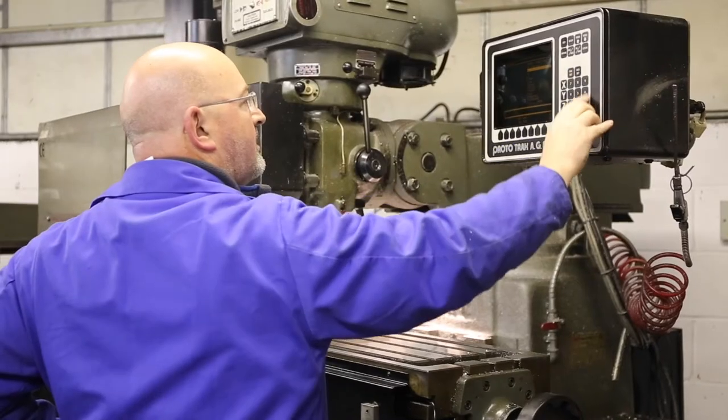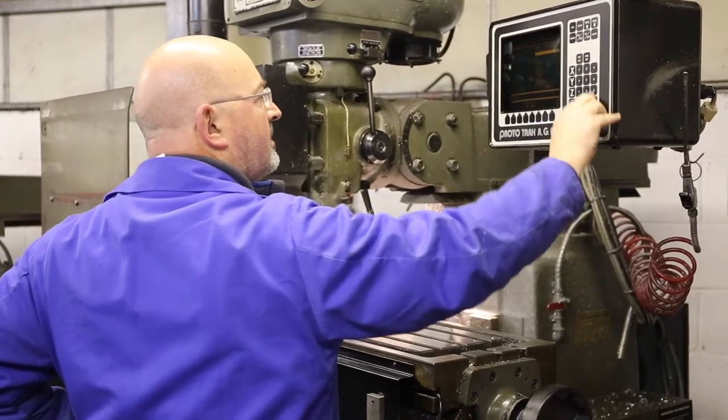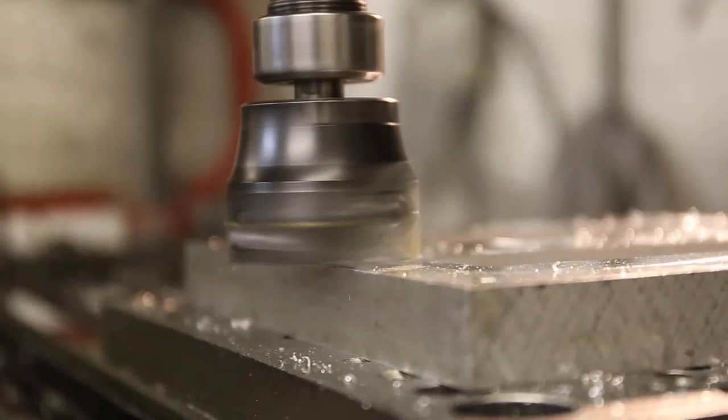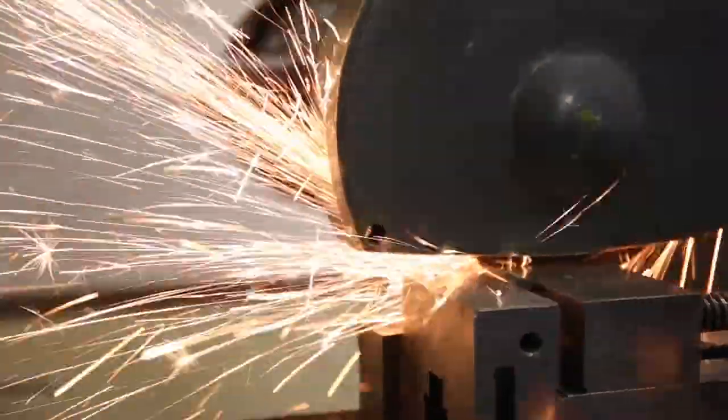Tool room consists of a number of CNC machines, lathe, spark erosion equipment and some simple grinding equipment.